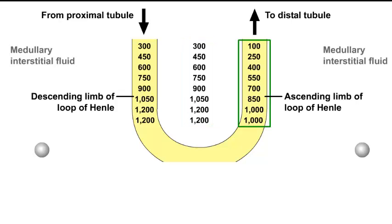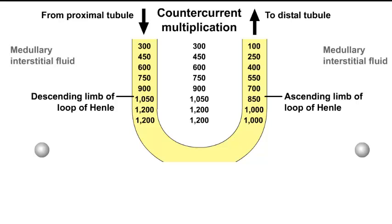In contrast, the concentration of the tubular fluid in the ascending limb progressively decreases as salt is pumped out and water is unable to follow. Note that even though the ascending limb pump can generate a gradient of only 200 MOSM per liter at each horizontal level, this effect is multiplied into a larger vertical gradient because of the counter-current flow within the loop. This concentrating mechanism is known as counter-current multiplication.